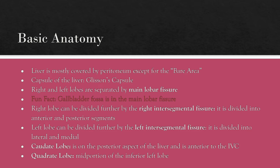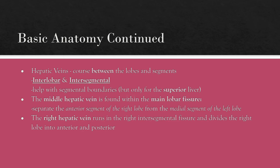There are four major lobes of the liver: right, left, quadrate, and caudate. When we talk about ultrasound, we don't really discuss the quadrate lobe — we really only focus on right, left, and caudate. Next week we'll talk about how we break up the liver into segments. We have our hepatic veins, which go between the lobes and the segments, meaning they are interlobar and intersegmental.